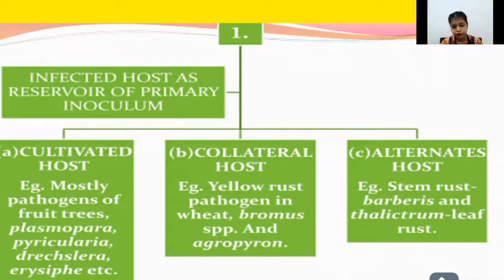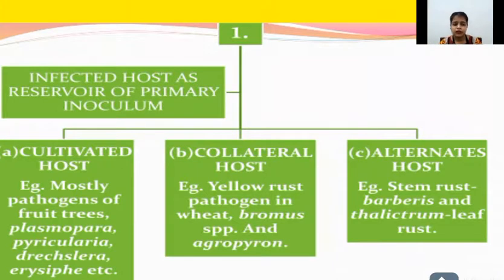Examples of infected host types: for collateral host, Plasmopara acts as a yellow rust pathogen in wheat; for alternate host, stem rust examples include Berberis and Thalictrum; and for leaf rust, similar alternate hosts are involved. These are the types of infected hosts that pathogens use for survival.